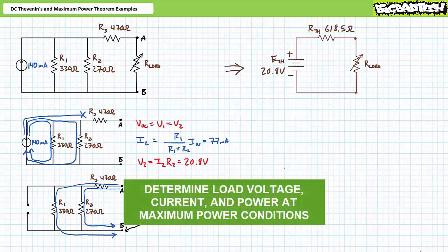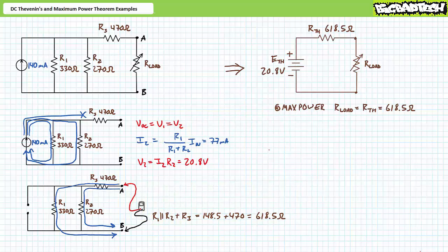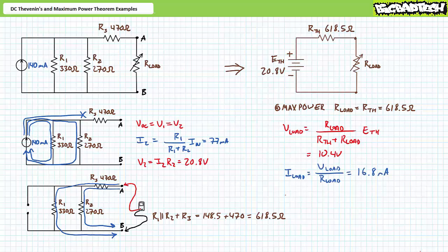Stage two now dictates we determine the load resistor which receives maximum power — solve for voltage, current, and power at maximum power conditions. By all means, pause and try stage two on your own. If you're tracking, you should have obtained the following results. The DC Maximum Power Transfer Theorem states that maximum power is transferred to a load when the load resistor equals the Thevenin's equivalent resistance. Therefore, our variable load resistor should see maximum power at a value of 618.5 ohms. The voltage divider rule demonstrates voltage across the load is 10.4 volts; Ohm's law gives a current of 16.8 milliamps; and the DC power formula gives 174.7 milliwatts at maximum power conditions. Any change in load resistor magnitude should result in less power delivery.